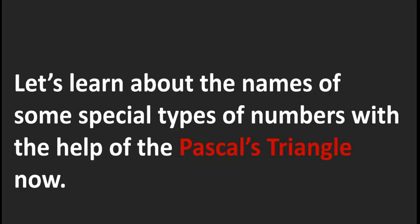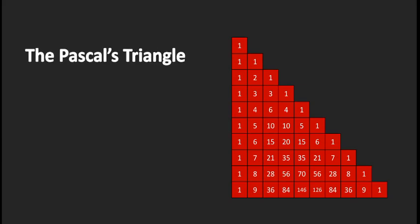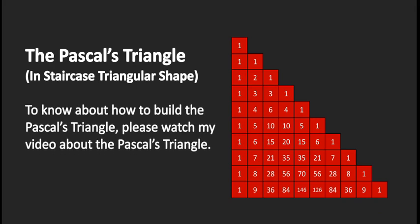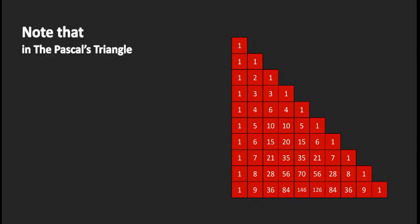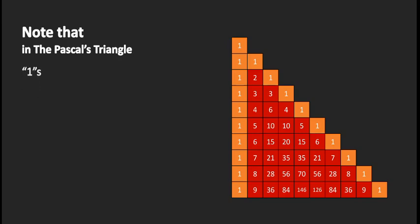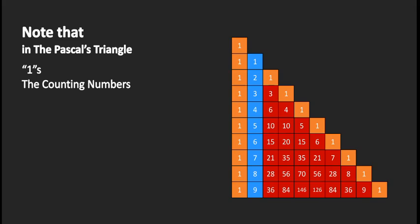Let's learn about the names of some special types of numbers with the help of Pascal's triangle. Here is Pascal's triangle in staircase triangular shape. To know how to build Pascal's triangle, please watch my dedicated video — the link is given above. Note that in Pascal's triangle, all the edge elements are 1s, and the next diagonal contains the counting numbers: 1, 2, 3, 4, 5, 6, 7, 8, 9, and so on. These numbers are also called natural numbers.